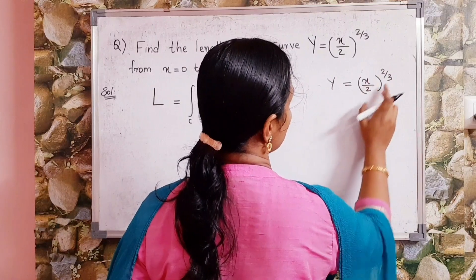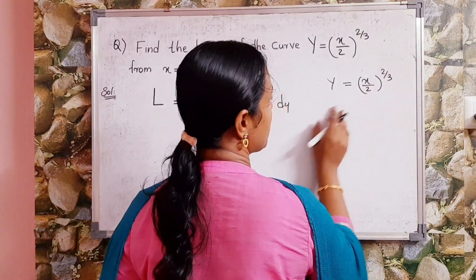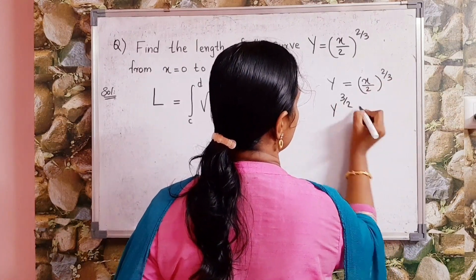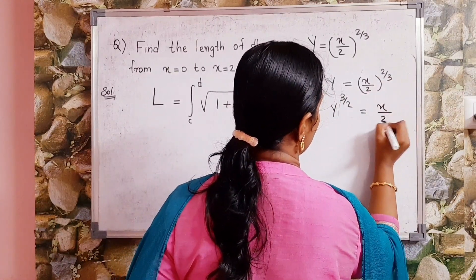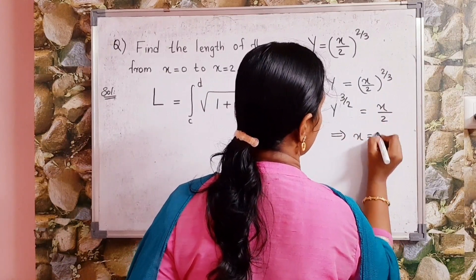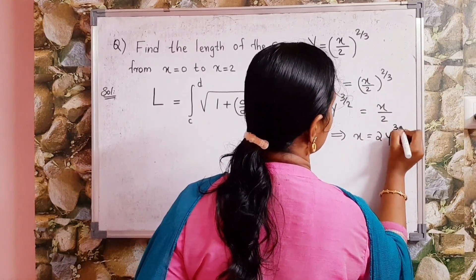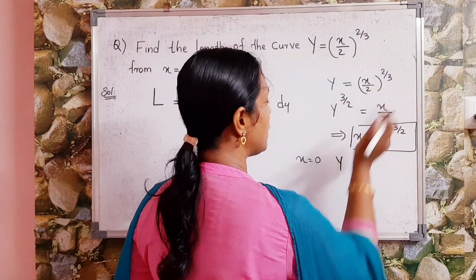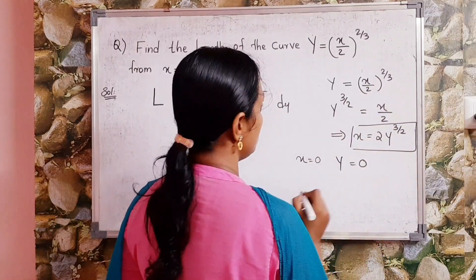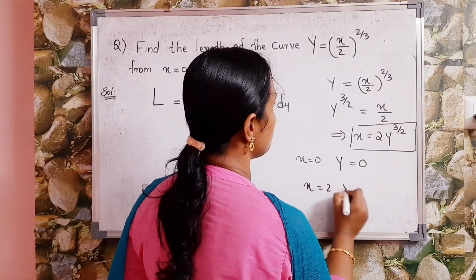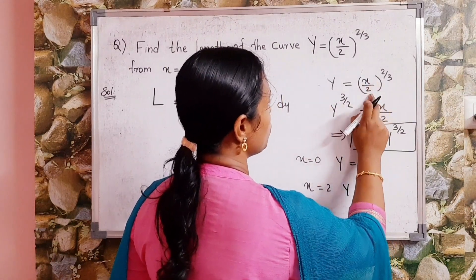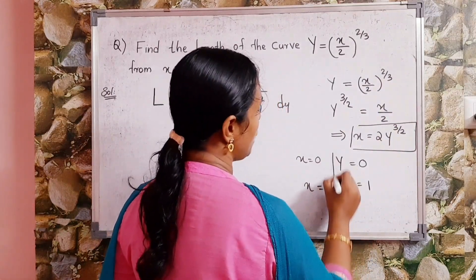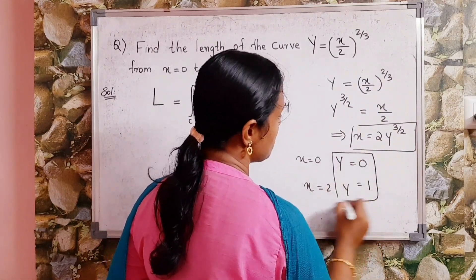So we use the formula with dx/dy. From y = (x/2)^(2/3), we get y^(3/2) = x/2, so x = 2y^(3/2). Finding y values: when x = 0, y = 0; when x = 2, y = (2/2)^(2/3) = 1. So y ranges from 0 to 1.